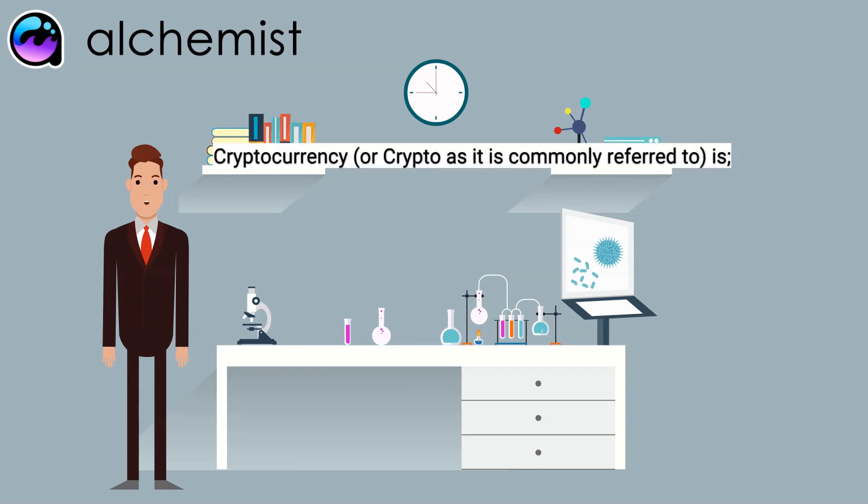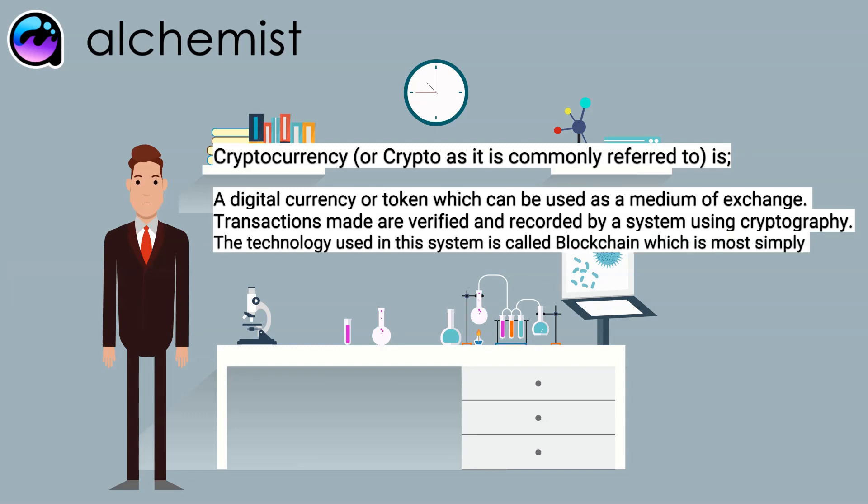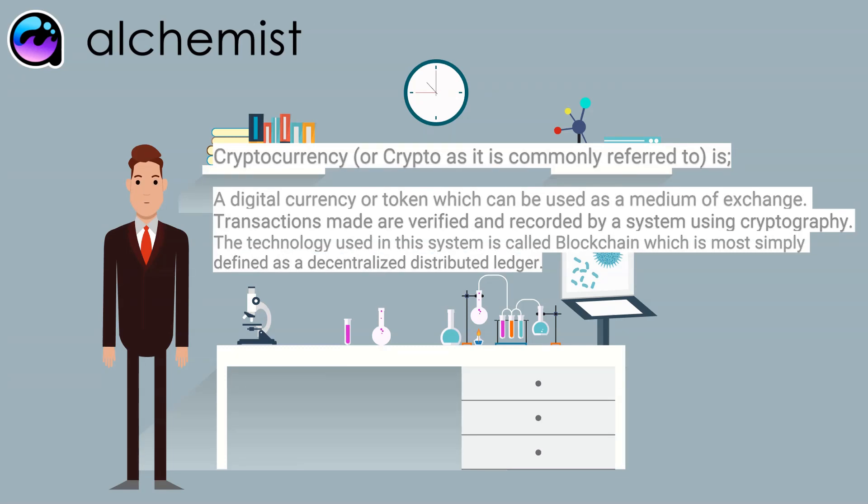Cryptocurrency, or crypto as it is commonly referred to, is a digital currency or token which can be used as a medium of exchange. Transactions made are verified and recorded by a system using cryptography. The technology used in this system is called blockchain, which is most simply defined as a decentralized distributed ledger.